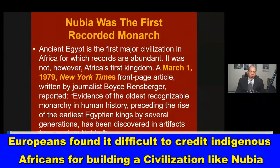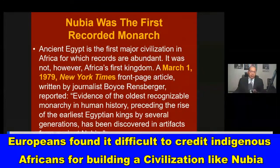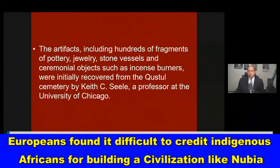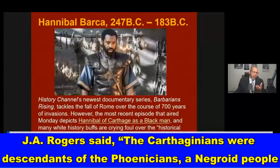Nubia was the first recorded monarchy in history. Ancient Egypt is the first major civilization in Africa for which records are abundant, but it was not Africa's first kingdom. A March 1st, 1979, New York Times front-page article reported: 'Evidence of the oldest recognizable monarchy in human history, preceding the rise of the earliest Egyptian kings by several generations, has been discovered in artifacts from ancient Nubia.' The artifacts — including hundreds of fragments of pottery, jewelry, stone vessels, and ceremonial objects such as incense burners — were initially recovered from a cemetery by Keith C. Seele, a professor at the University of Chicago.